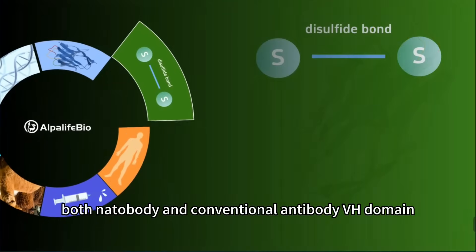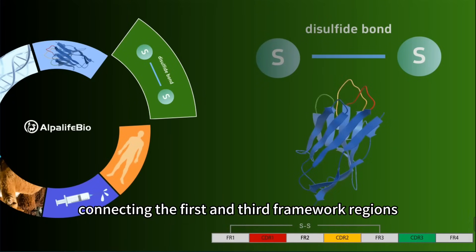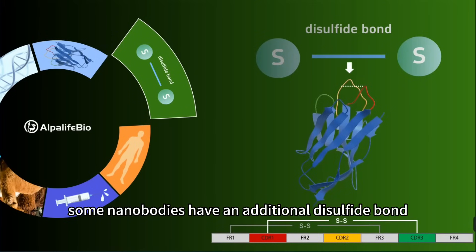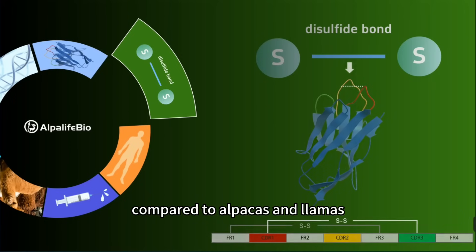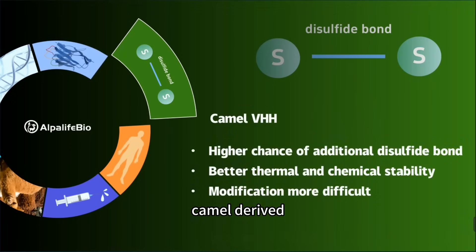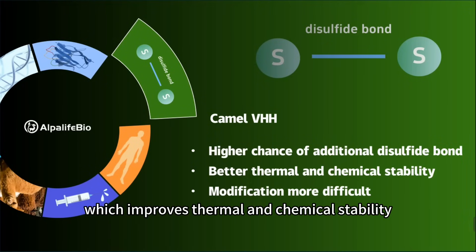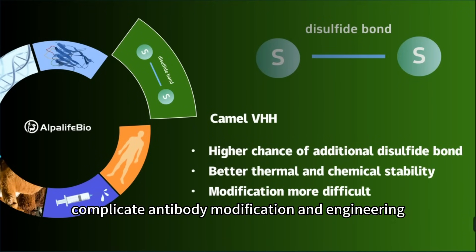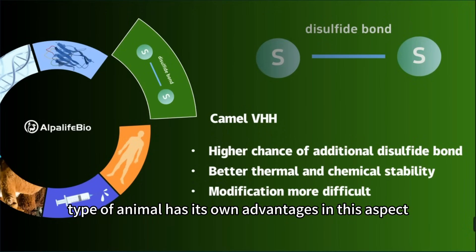4. Additional Disulfide Bond: Both nanobody and conventional antibody VH domains have a disulfide bond connecting the first and third framework regions. Some nanobodies have an additional disulfide bond tethering CDR1 and CDR3, stabilizing specific antibody conformations. Compared to alpacas and llamas, camel-derived nanobodies have a higher possibility of generating an additional disulfide bond, which improves thermal and chemical stability. However, they also complicate antibody modification and engineering. Thus, each type of animal has its own advantages in this aspect.